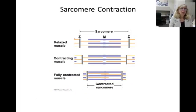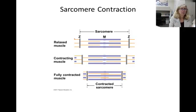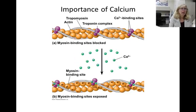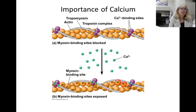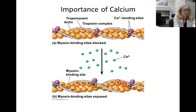As myosin pulls on the actin, it brings the Z-lines closer together and makes the sarcomere smaller. Myosin can only bind to actin on specific binding sites, shown here as little pits, but these active sites are normally covered over by a regulatory protein called tropomyosin, which looks like a long string.